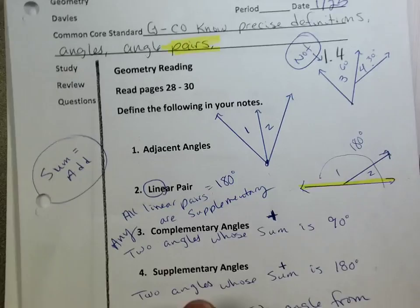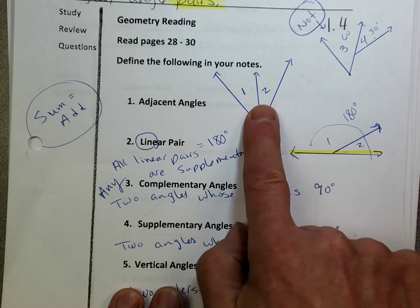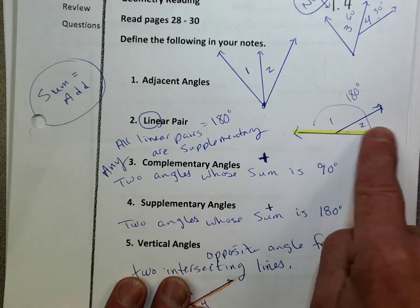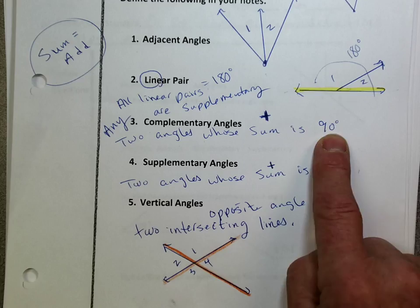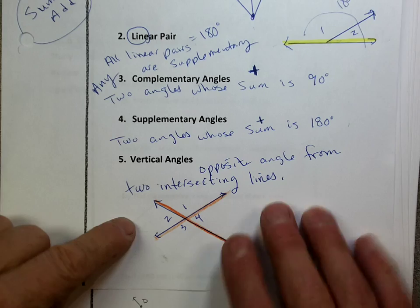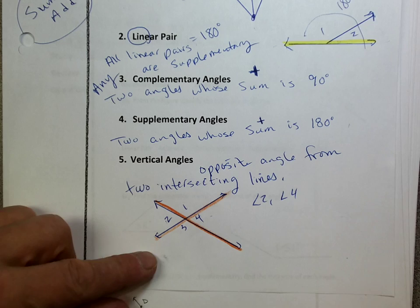Real quick, I'm going to go through it for those who didn't see it. There's angle pairs. We're talking about adjacent angles — two angles are next to each other, they have to share a vertex. Linear pair — two angles that make together a straight line, that's the key, a line. Complementary angles — any angles whose sum, sum means to add, any angles that add to 90. Supplementary — any two angles whose sum is 180. And then vertical angles — angle two and angle four are vertical angles, and angle one and angle three are vertical angles. Don't call them opposite angles, but they are kind of opposite, and they will always be congruent.